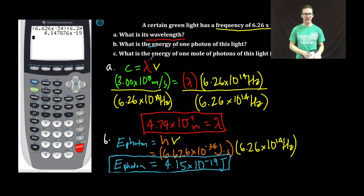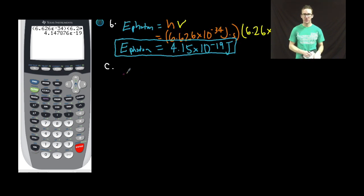Part C, though, is where it becomes a little tricky. Now we want the energy of one mole of photons in kilojoules per mole. Okay, so as I look to solve part C, the first thing I'm going to do, 4.15 times 10 to the negative 19 joules per one photon.